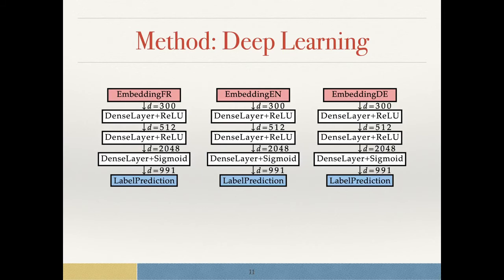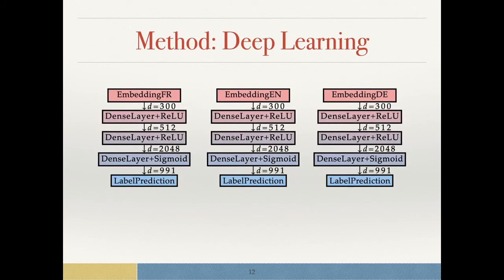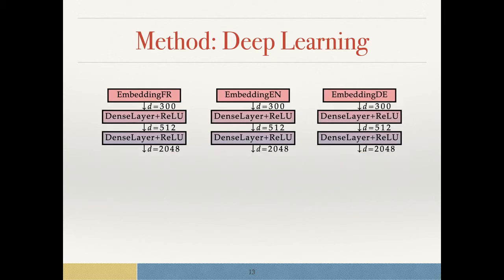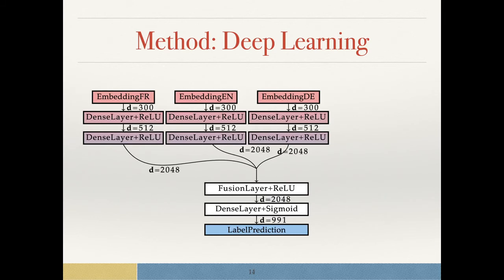Our deep learning architecture works as follows. We first take all the language embeddings independently and get it through a three-layer network and train these. Once we have trained these, we discard the last layer and put them together into a new architecture, where we have a new non-initialized fusion layer and dense layer.